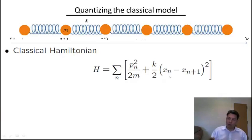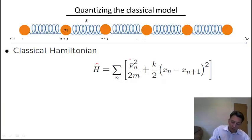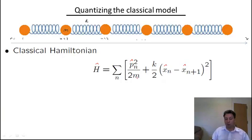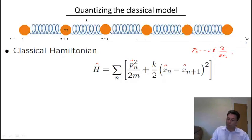Now, to go to the quantum problem, we need to quantize this Hamiltonian. It turns out that it's very easy to do so — as easy as it was in the case of a single harmonic oscillator. All we have to do is just to put hats on top of H, P, and X, which means that we make these variables from the classical case into operators in the quantum problem. For example, if we're working in position space, P sub N is simply the derivative minus i h-bar d over d x_N, which acts only on the nth coordinate of the nth oscillator.